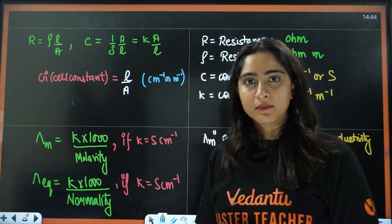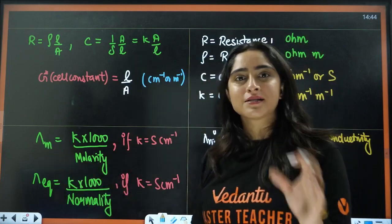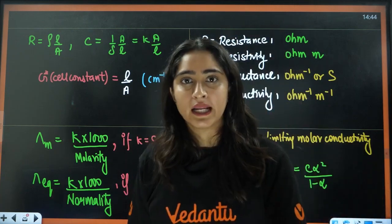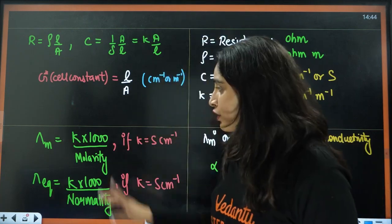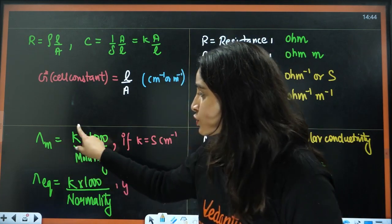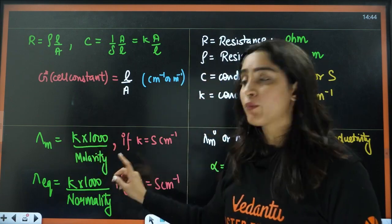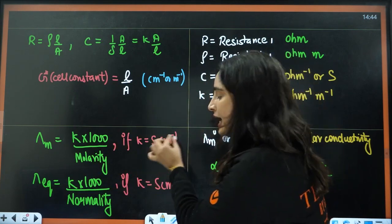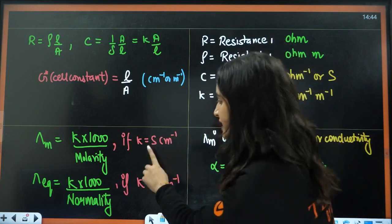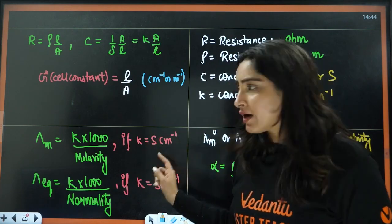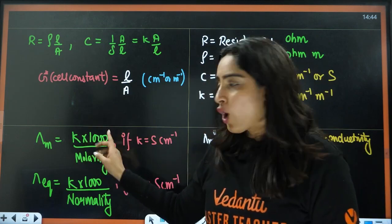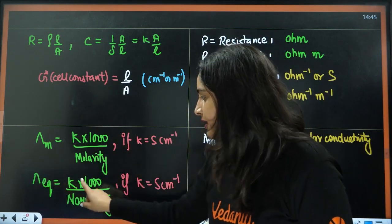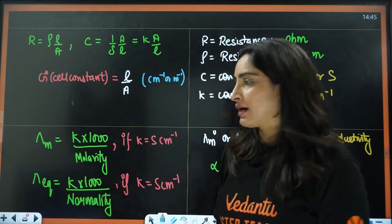Next, we have molar conductivity. This kappa represents simple conductivity. But if you want to calculate molar conductivity or equivalent conductivity, the formula is: molar conductivity equals kappa times 1000 divided by molarity — when kappa is in siemen centimeter inverse. If kappa is in siemen meter inverse, the 1000 will not be there. Similarly, equivalent conductivity equals kappa times 1000 divided by normality.